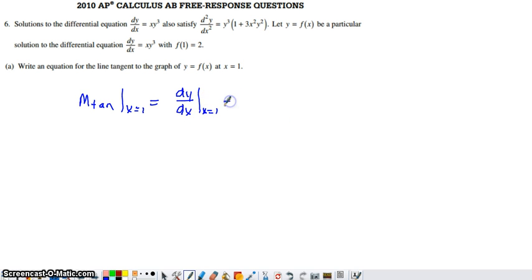So the slope of our tangent line is going to be found by putting 1 in place of the x in dy/dx. Now, we do have this y in dy/dx, but we know that when x is 1, the corresponding y value is 2. So we also have a number to put there. And if you simplify that, you're looking at 1 times 8, which would give you a slope of 8.